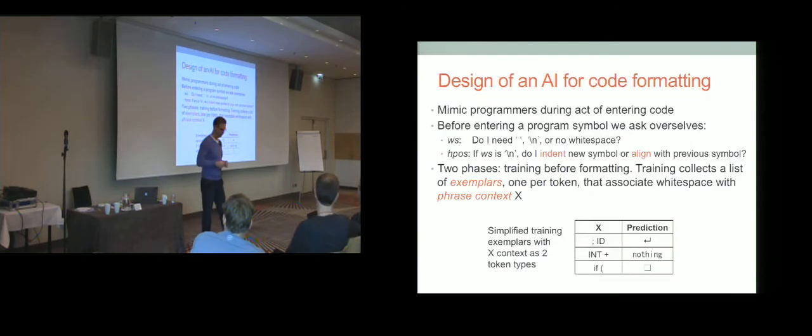So how does this damn thing work? So rather than say, when I see an if statement pattern, here's how to format it, here's a method pattern and how to format it, we're going to mimic a programmer as he or she is entering code. In other words, what white space should he or she inject as they are entering tokens, program symbols? So imagine after a semicolon, I might say, oh, I normally produce a new line at this point. And if I do produce a new line, should I align the next line? Should I indent? What do I do with it? So there's actually two canonical white space directives that we've identified: white space and horizontal positioning.